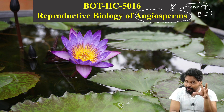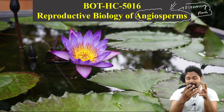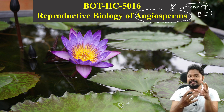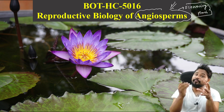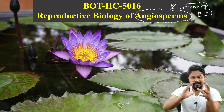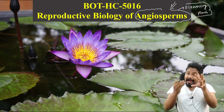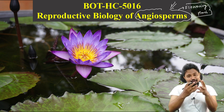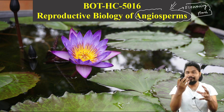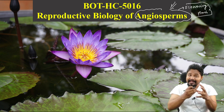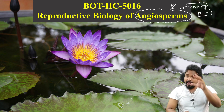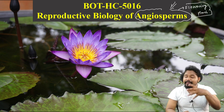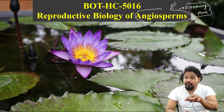So here we have the flower - a modified shoot - with full details: calyx, stamen, anther. Anther and pollens - this is full flower anatomy. Why do pollens develop? Why do embryos develop? Why is fertilization important? Different types of fertilization and polyembryony are all to be taught.